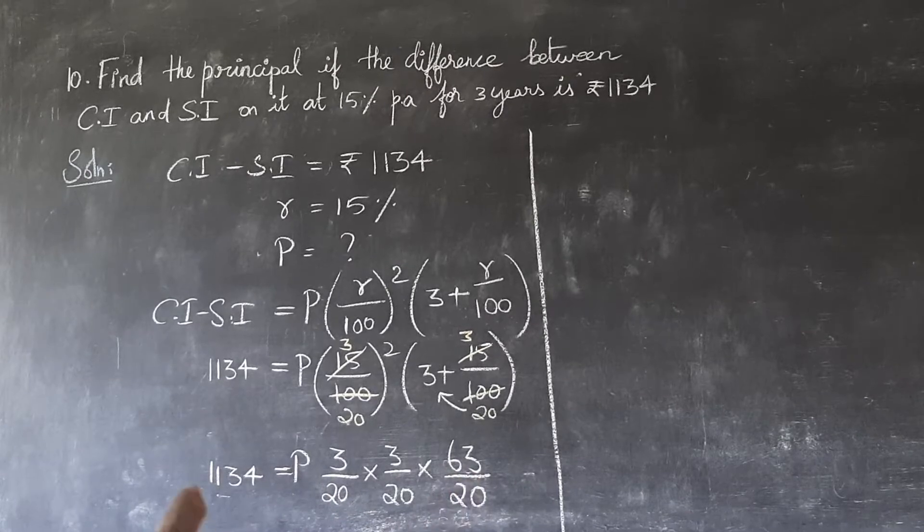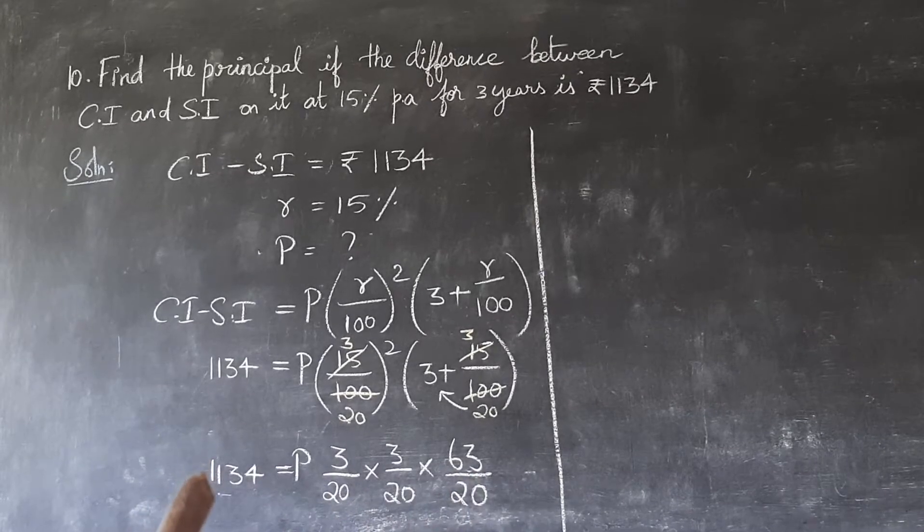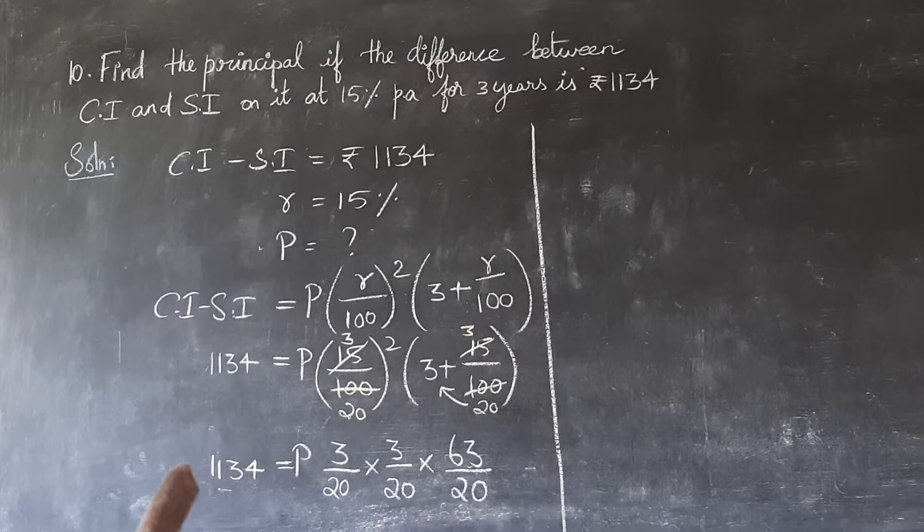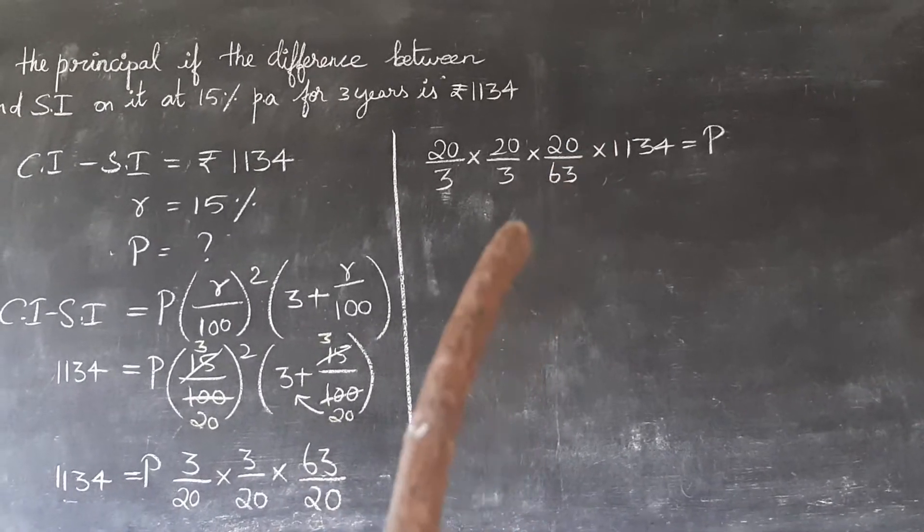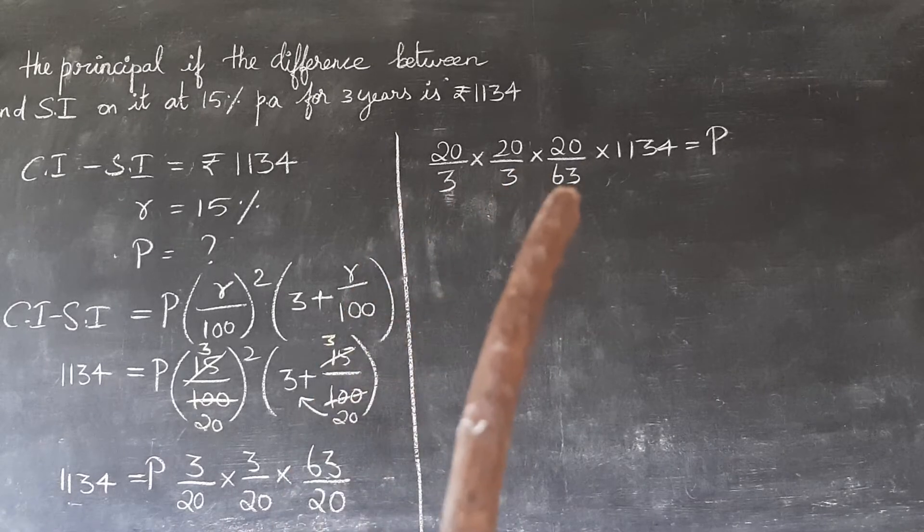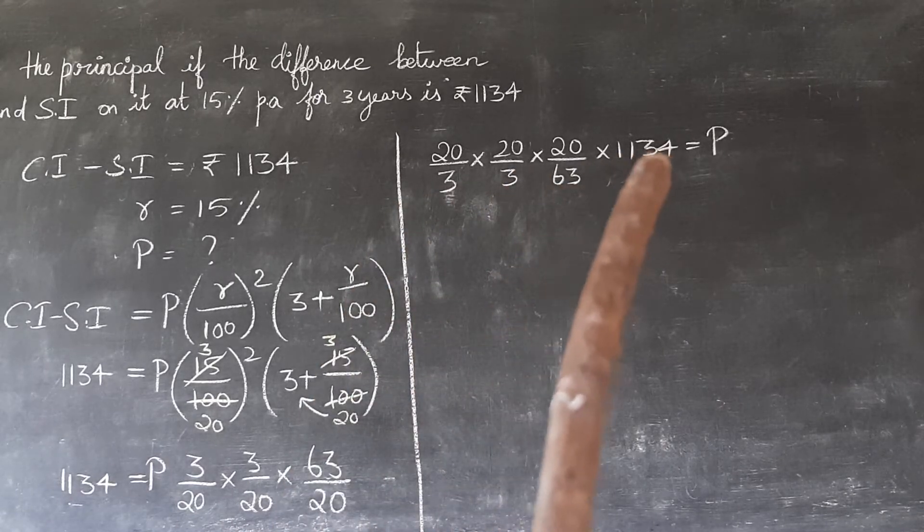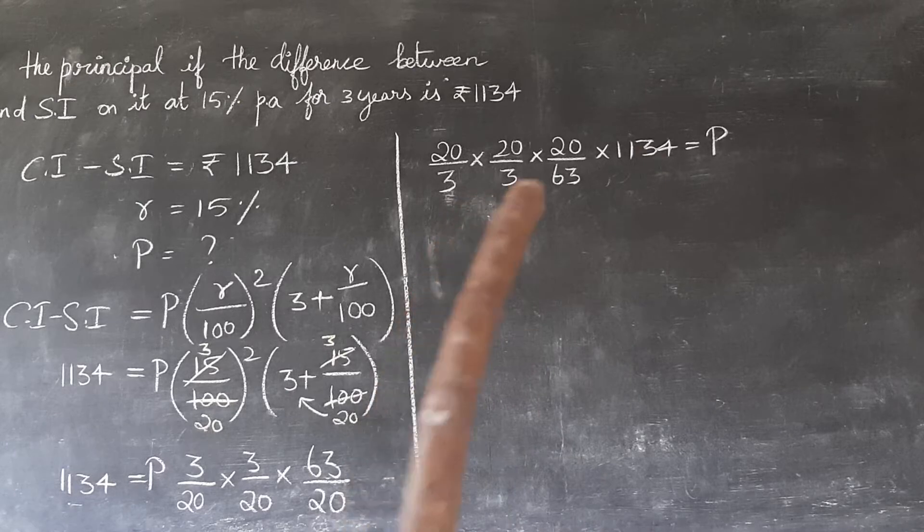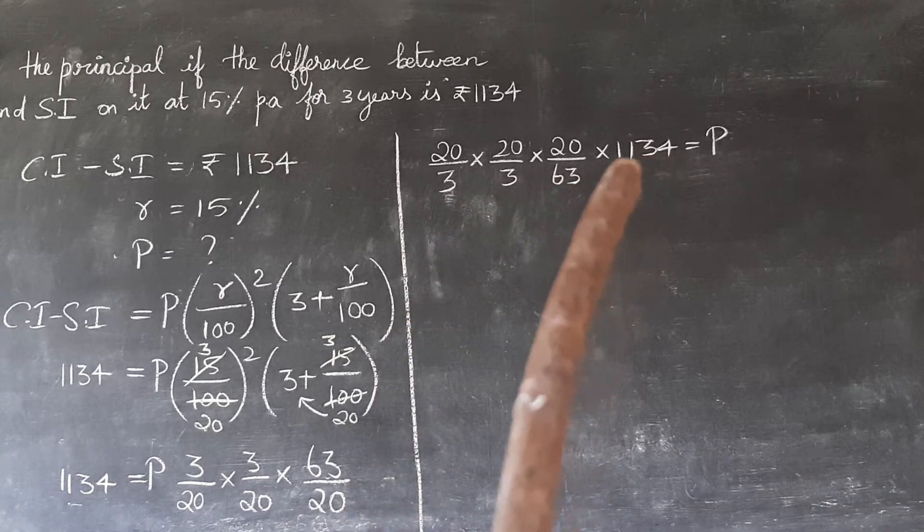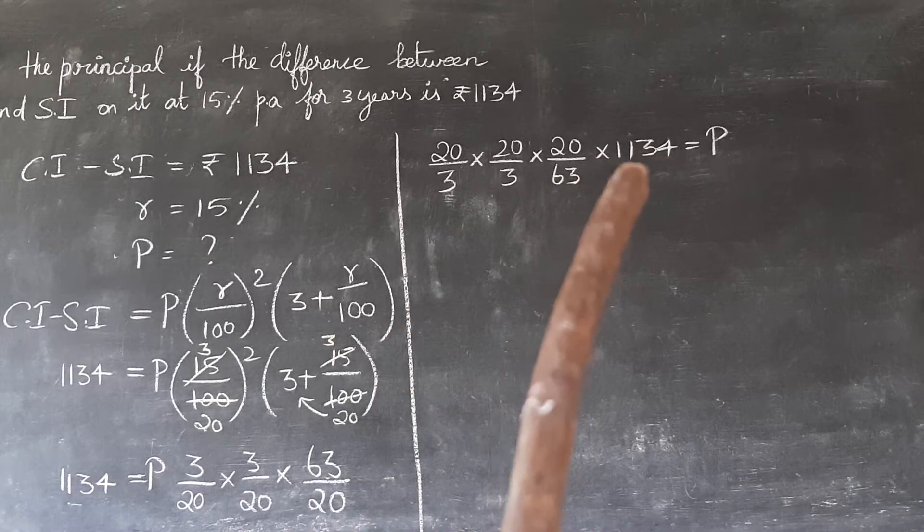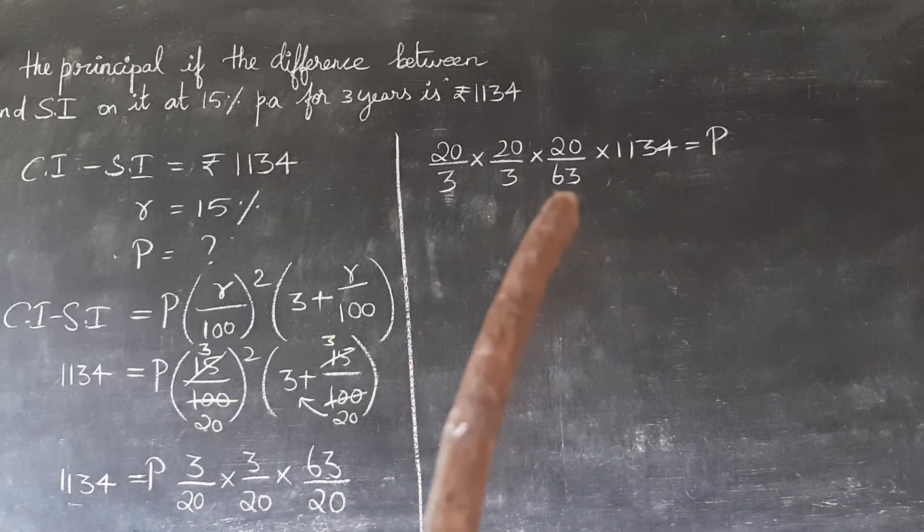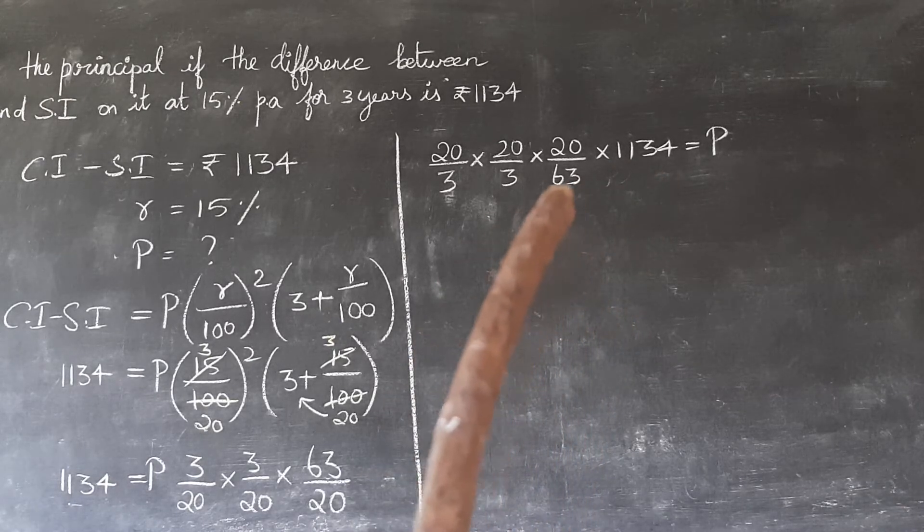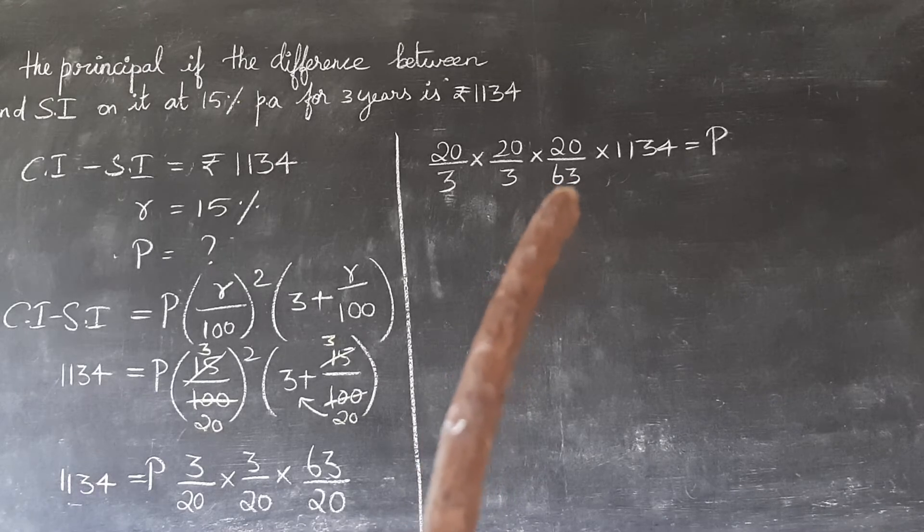So all these values need to be taken to the other side of the equation. Everything becomes reciprocal. So now I have 3, 3, 63, and 1134. Which table can we cancel these in? Let's think. We have 63 and 1134 - we can cancel in 3 table or 9 table.